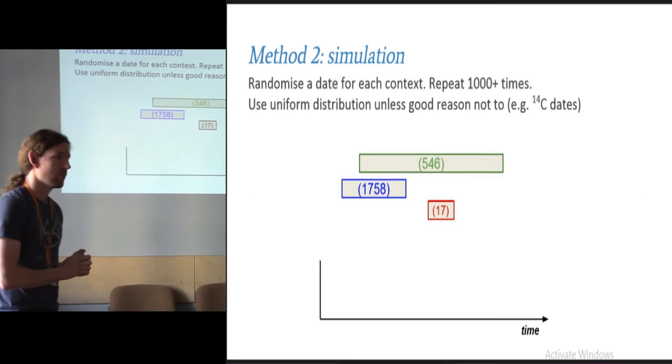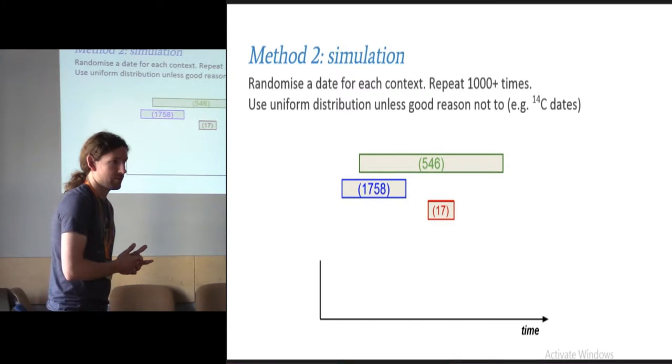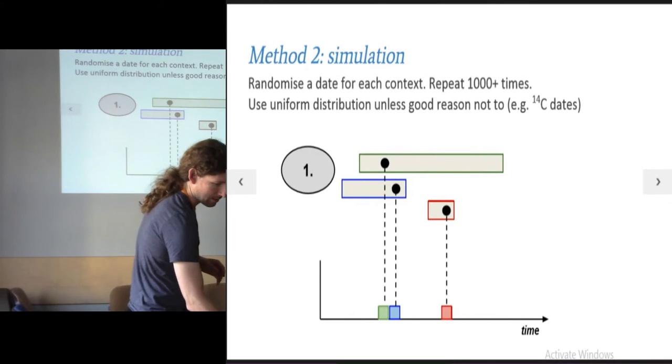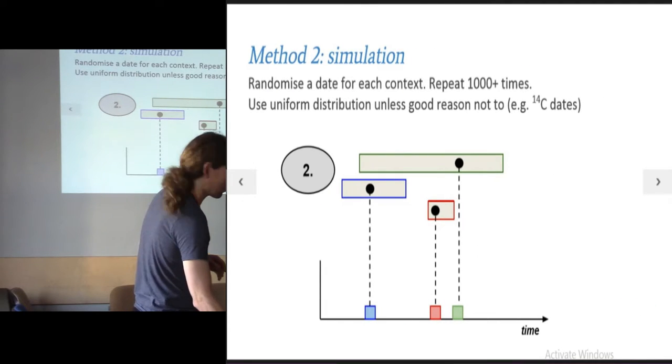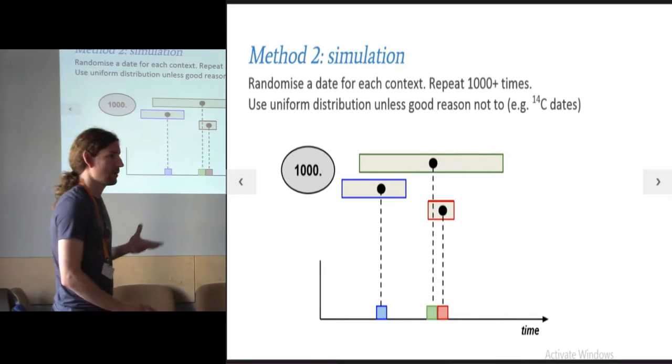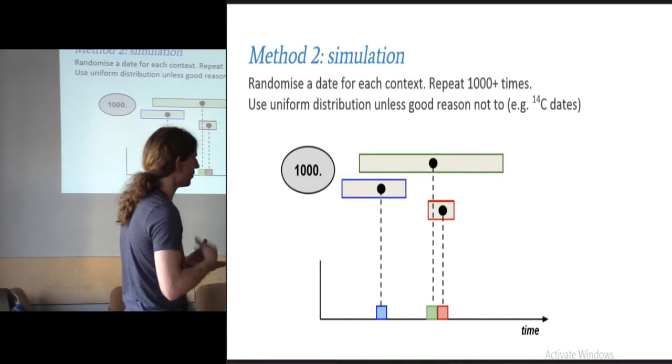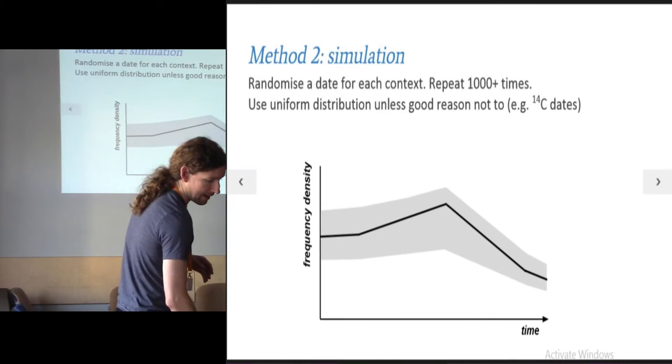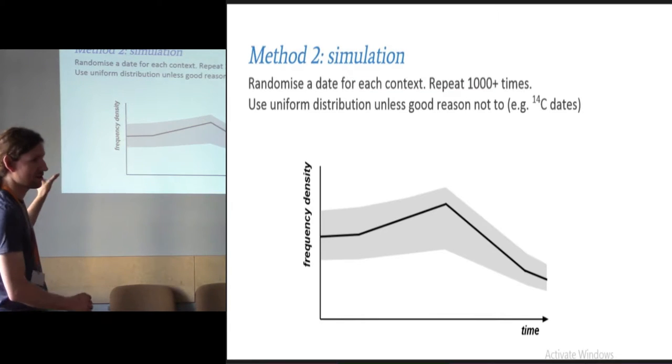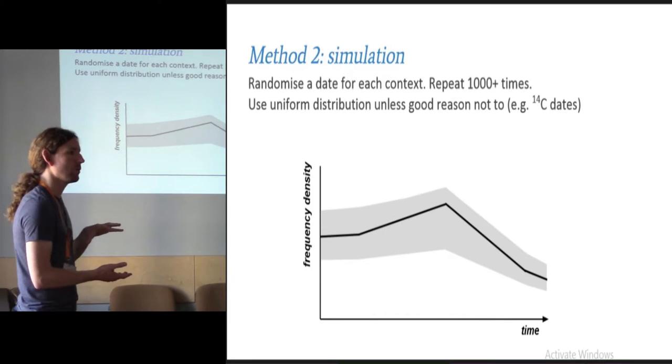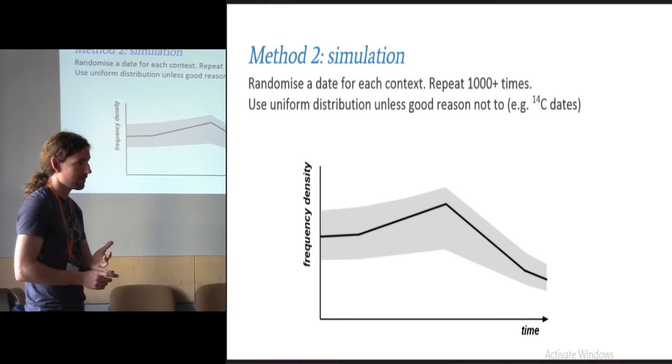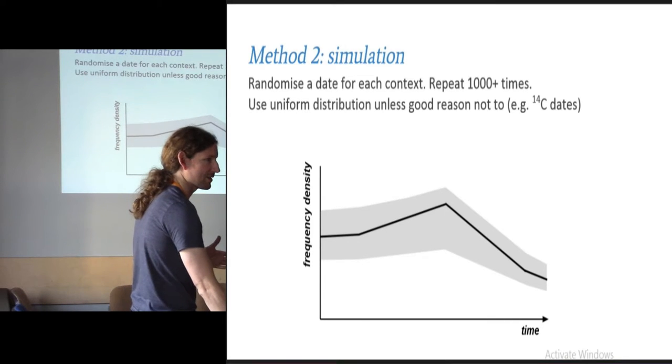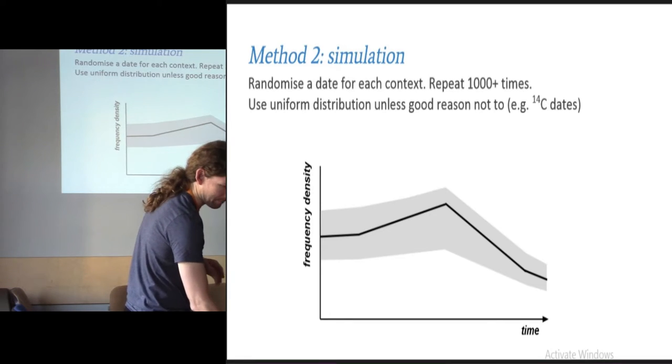The second method, one which is my favorite method, is a simulation-based approach. The same three contexts, but this time you randomize a date from each of them, and then you randomize another date from each of them. I'm not going to click through this 1,000 times. But you do that 1,000 times, 2,000 times, 5,000, however many. Theoretically, you should keep doing it until the results converge. But 5,000 tends to be plenty. And you end up with something looking like this. This is a median and a 95% confidence interval. Because you look at each one of those 1,000 runs you ran, you build a histogram and compare them effectively. I'll be visualizing this in a moment.